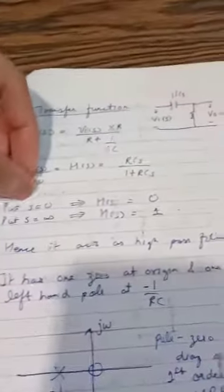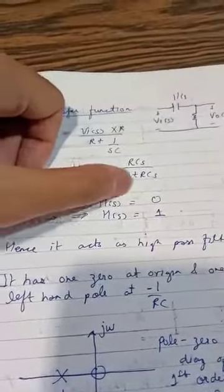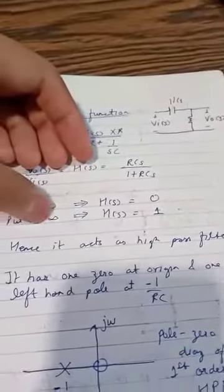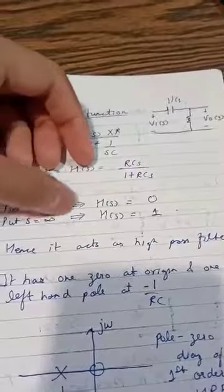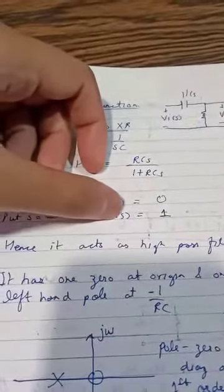When we put s equal to 0, the transfer function value is 0, and when we put s equal to infinite, then the value of transfer function is 1. So it is working as a high pass filter.